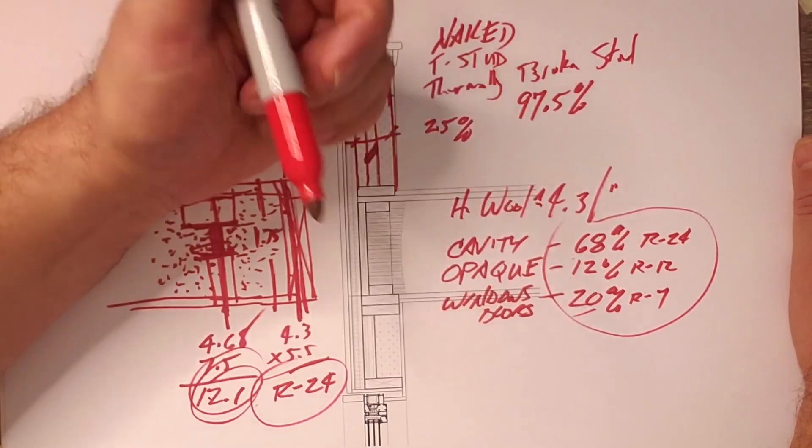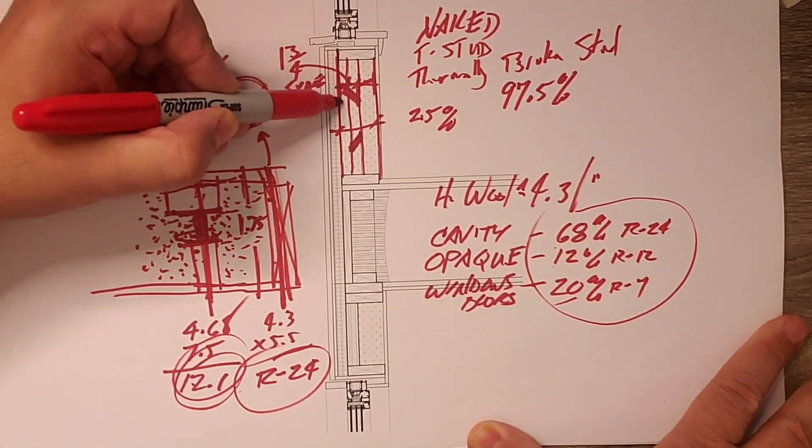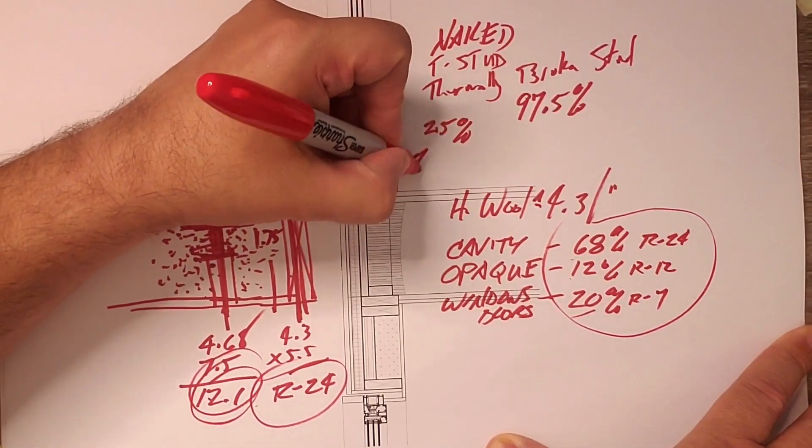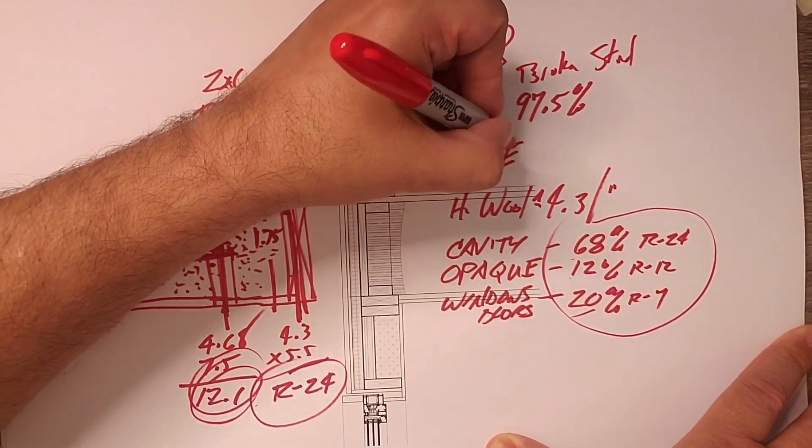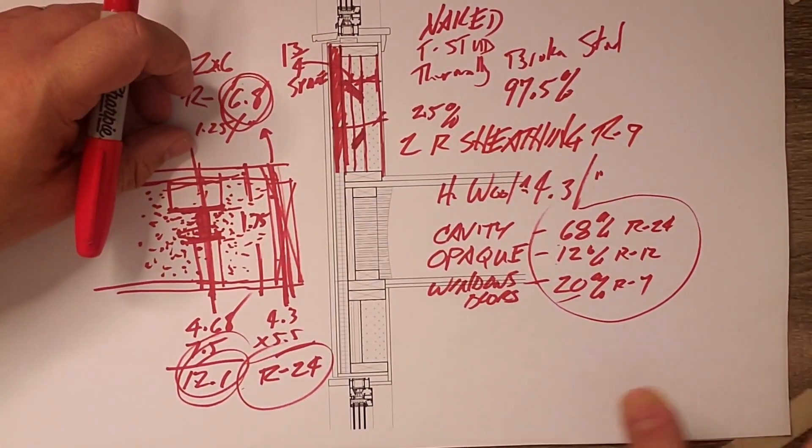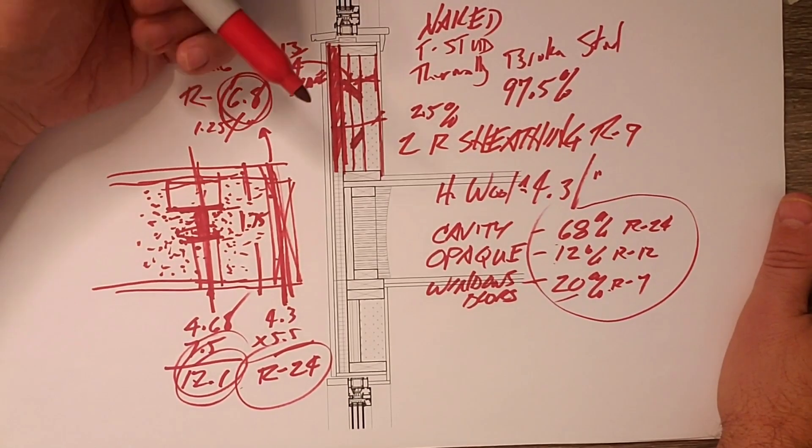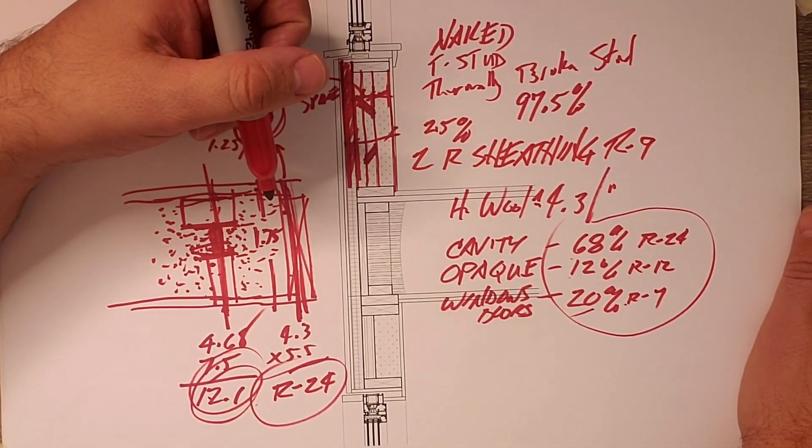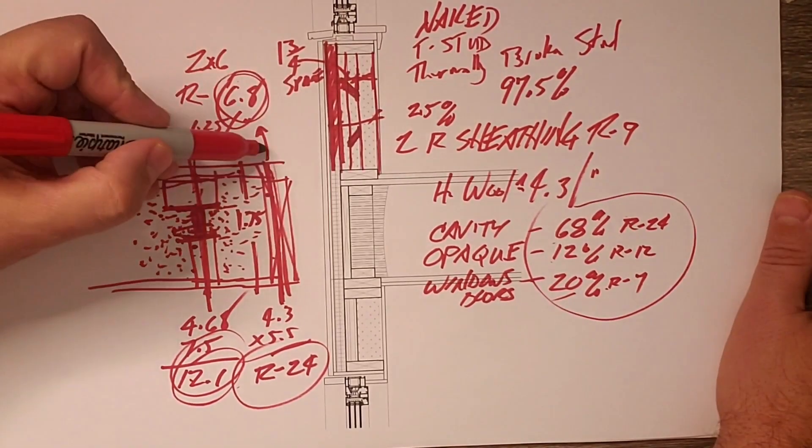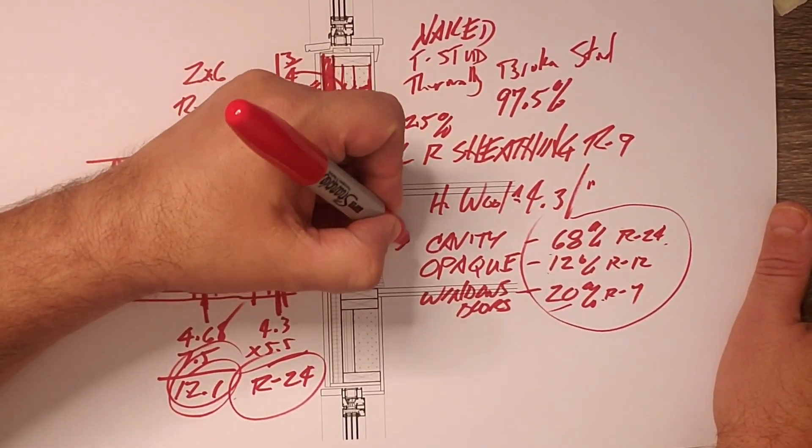Now one of the other things to realize on this house is we went a step further and added R9 out here and we did that with Zip R sheeting and that is R9. So when I look at these numbers and say R24, 12 and 7 well the 7 I really can't change I can just buy the best windows or doors that have the value that I can get and I live with that but the R24 cavity area well that also gets that R9 out here so I can add that to that 24 and my cavity is actually 33.